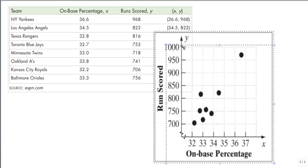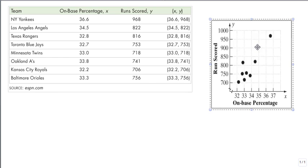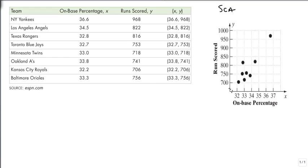And so we create a scatterplot by creating points. So this is what we call a scatterplot. We got it by taking a point from the on-base percentage and the runs scored, and we can see the different teams placed over here.